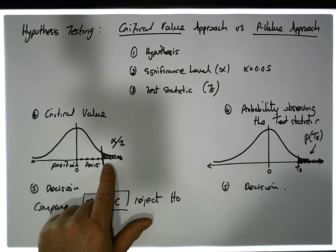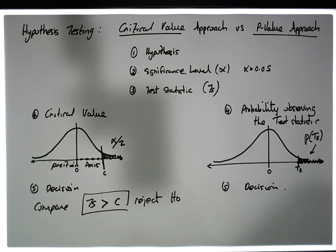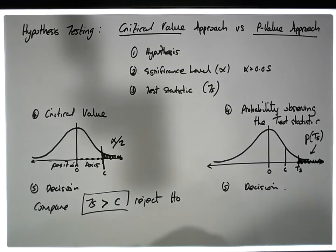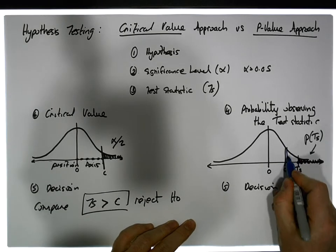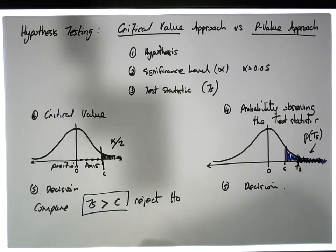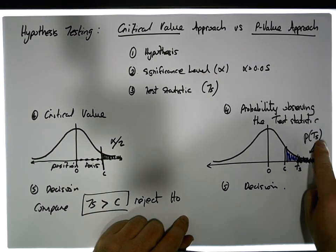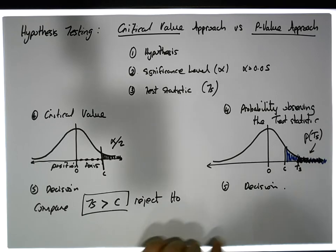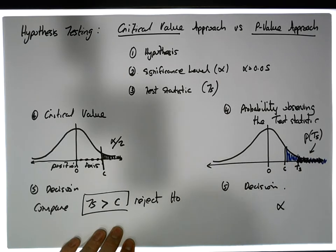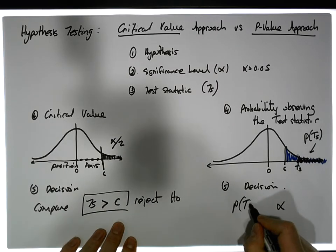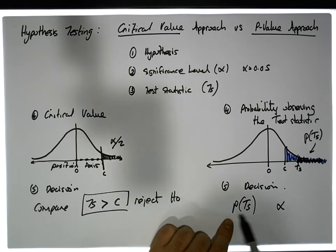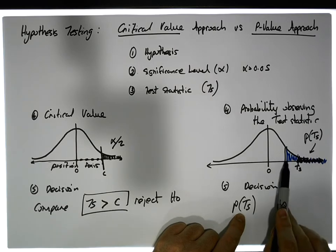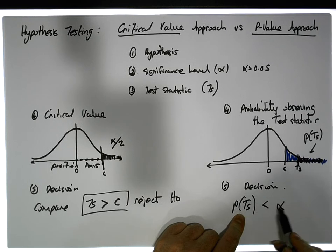We only reject when the test statistic is beyond the critical value, which means the critical value sits between the test statistic and the tail. This produces two different areas: the blue area under the curve, which contains the black area. The blue area is alpha, and the black area is the probability of observing your test statistic. When the test statistic is beyond the critical value, the black area ends up being smaller than the blue area.